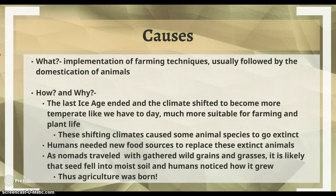So some causes — like how and why this occurred. Well, it caused many of the species of animals that humans relied on to go extinct. And so therefore new sources of food were needed. Dealing with things like grains or grasses, they must have dropped seeds in the soil and discovered that they would grow, and their culture was born.